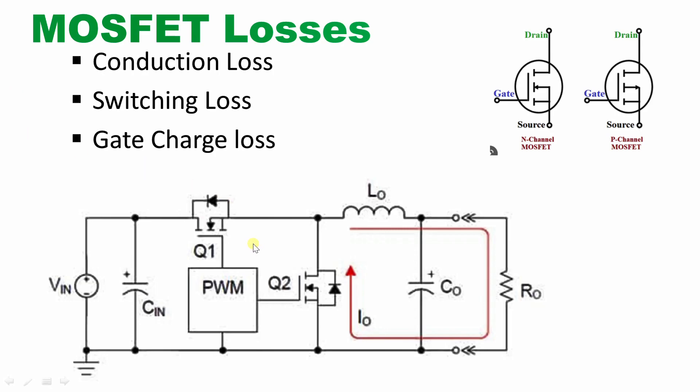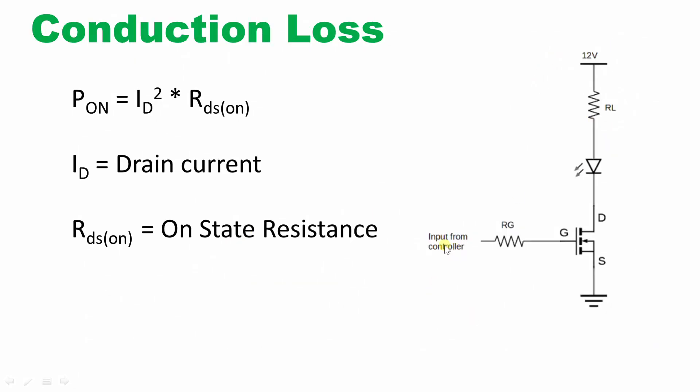In another application, a microcontroller is used to turn on an LED — this is not a switching application but a continuous conduction mode application. Based on which application your MOSFET is actually working in, you can determine which of the three losses will dominate — either conduction loss or switching loss.